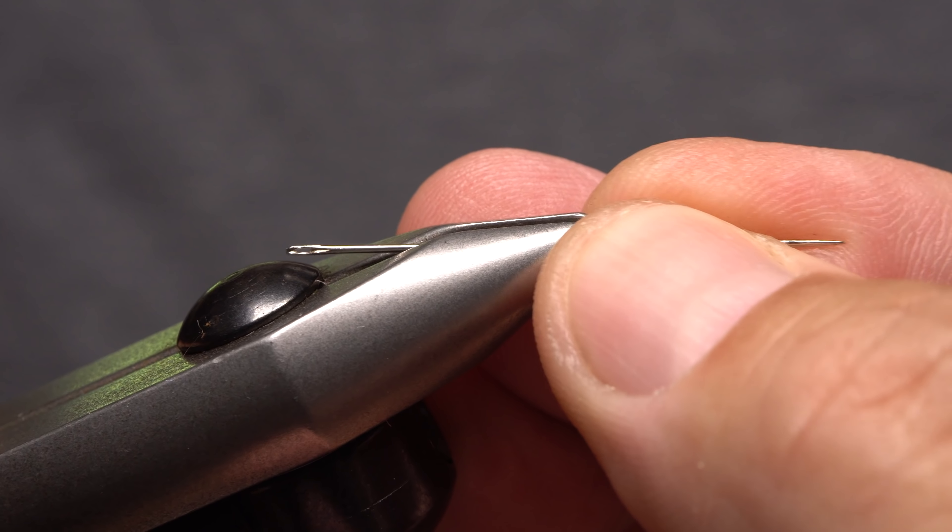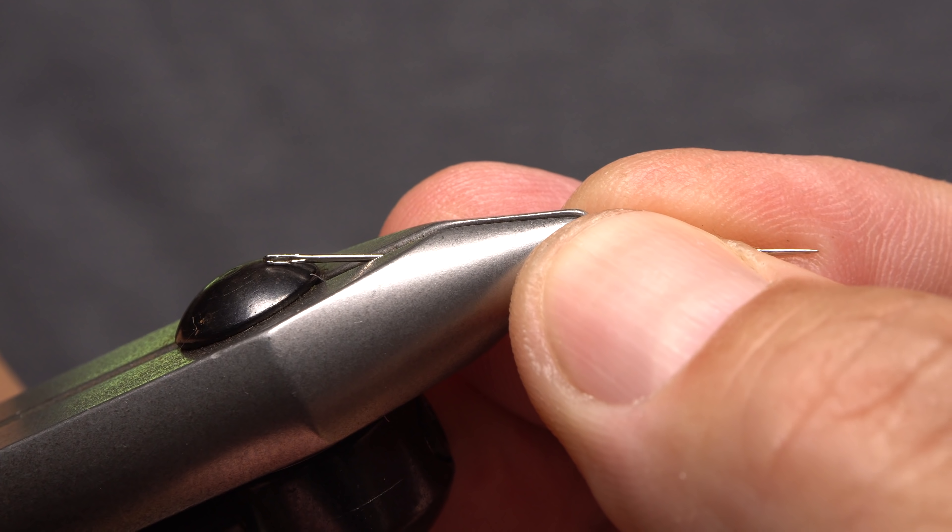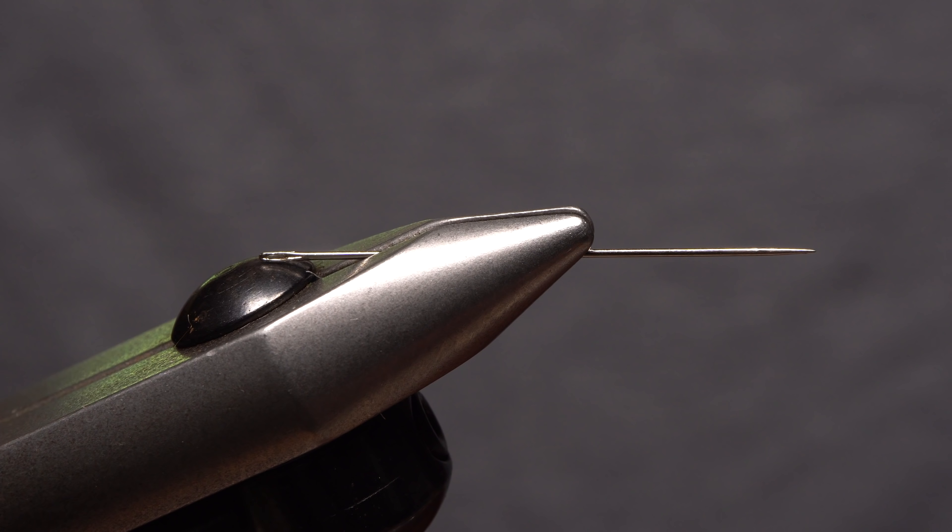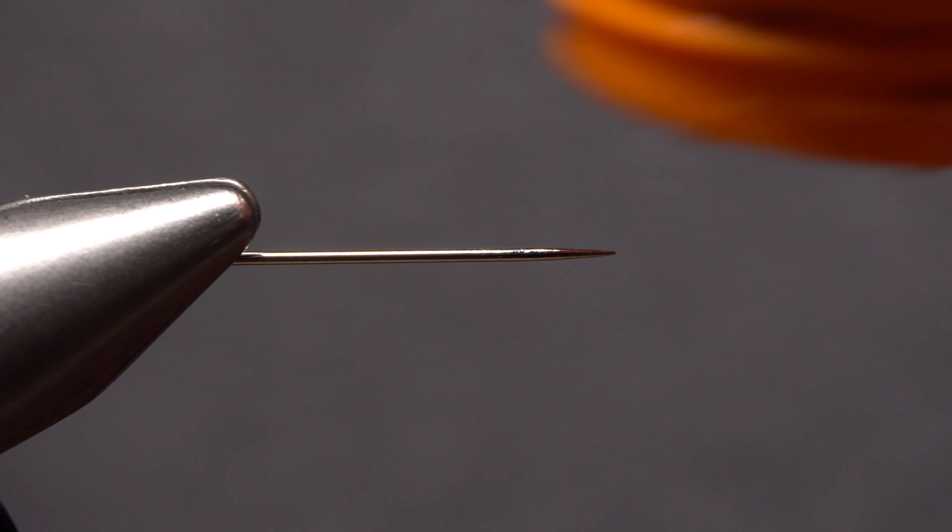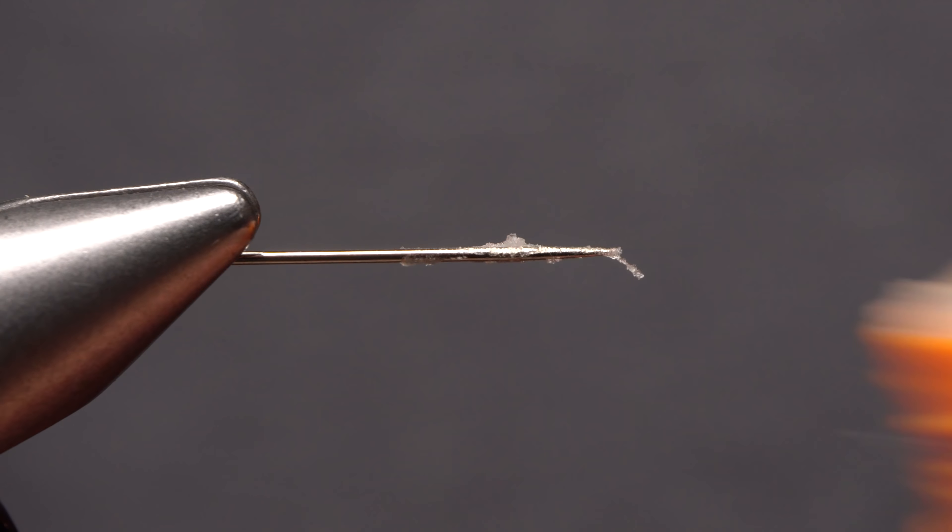To start, place a short fine sewing needle in the jaws of your tying vise with the point end out. Regular dubbing wax, although not essential, works well as a lubricant and aids in the removal of the extended body once it's complete.